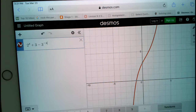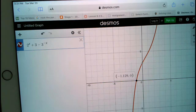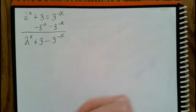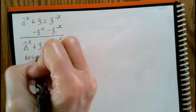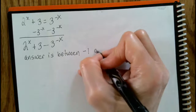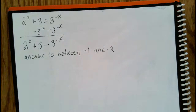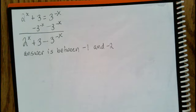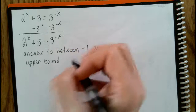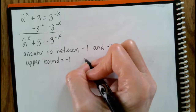We want to find where our answer is. With Desmos, we can see that value — it's negative 1.129. But we're not getting an actual answer here; what's important is that the answer is between negative 1 and negative 2. So negative 1 is the upper bound and negative 2 is the lower bound, since negative 1 is farther to the right on the number line.